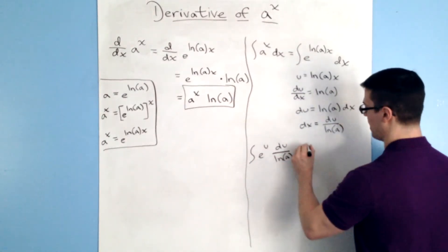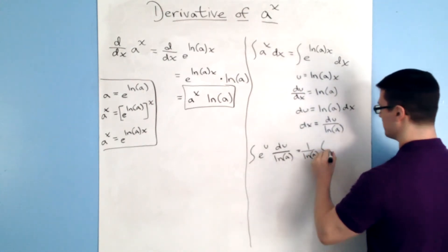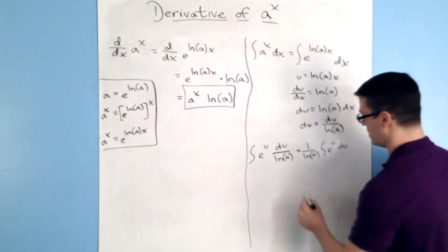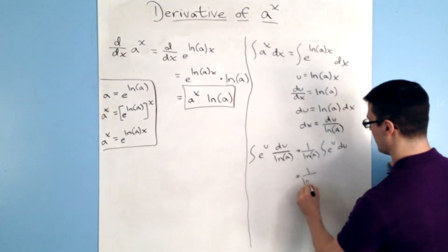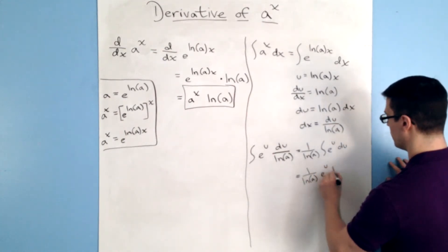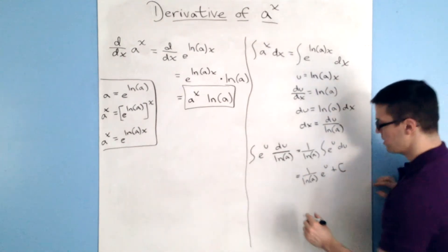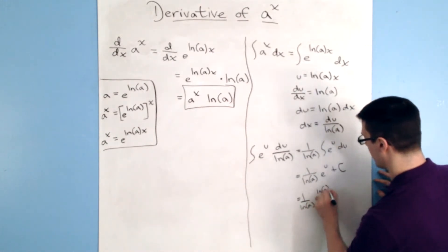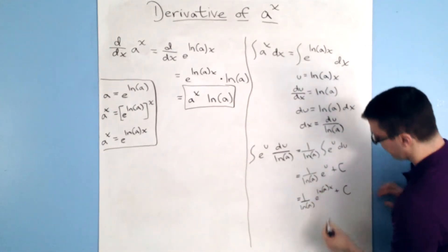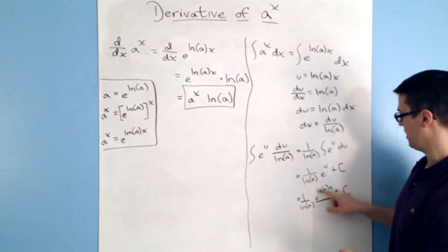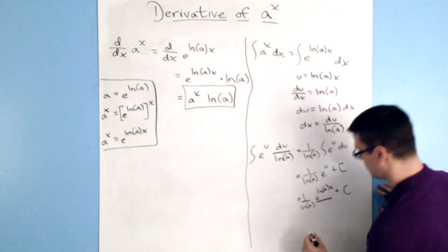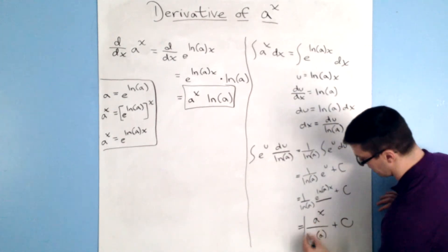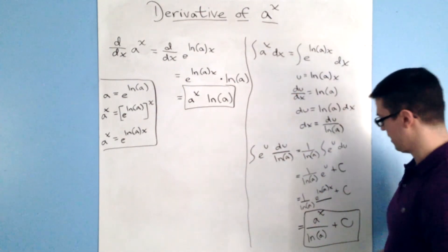Now I'm going to substitute everything back into the original integral. I'll have e to the u, because u equals the power, times dx which is du over ln a. I'm going to pull the ln a out, so you'll have 1 over ln a in front of the integral times e to the u du. We know this anti-derivative is just e to the u plus c, so you end up with 1 over ln a times e to the u plus c. Re-substituting u back in gives 1 over ln a times e to the ln a times x plus c. Since e to the ln a times x equals a to the x, the final answer is a to the x divided by ln a plus c, as the anti-derivative of a to the x.